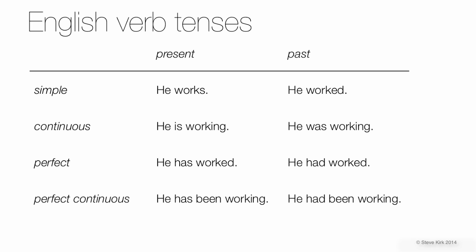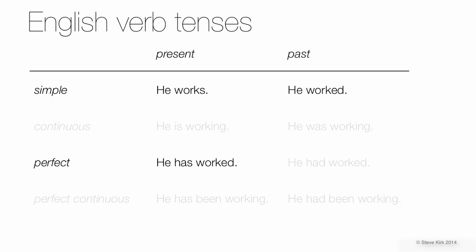The next topic we're going to talk about is verb tenses. The method section is almost entirely in past simple — it's very easy to write. The introduction is not so easy. Basically, these are the three tenses you're going to be using in academic writing in general, and especially in the introduction, you'll be using all three of them.